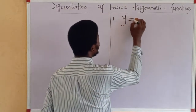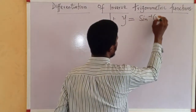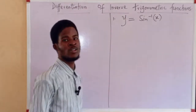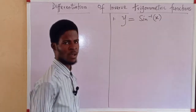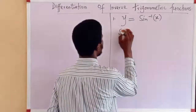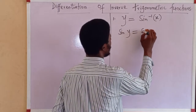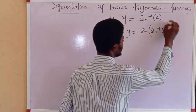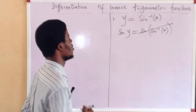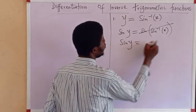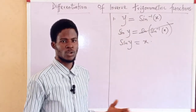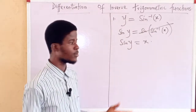I have y equal to the sine inverse of x. What is dy/dx? Given that y equals sine inverse of x, if I take the sine of both sides — that is, sine of (sine inverse of x) — I am taking the sine of both sides so as to eliminate the sine inverse. So I'm now having sine y equal to x. The first thing was to do away with the inverse trigonometric function by taking the sine of both sides.